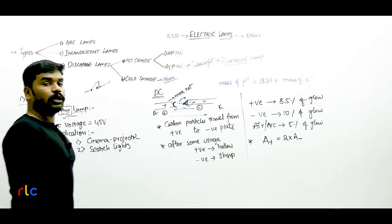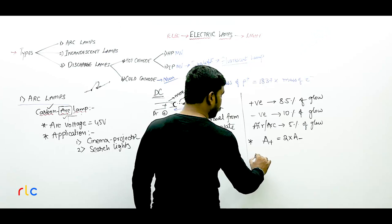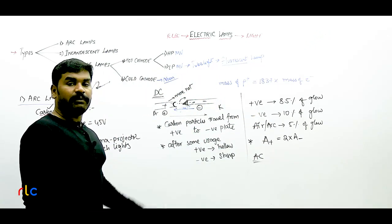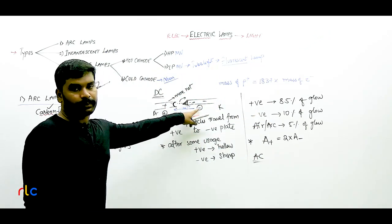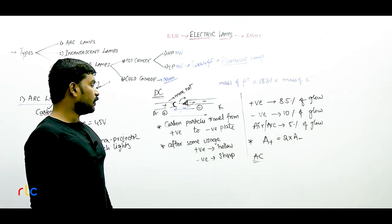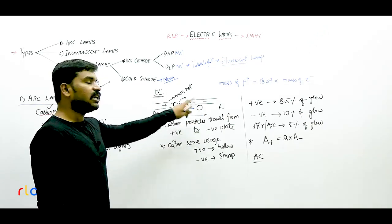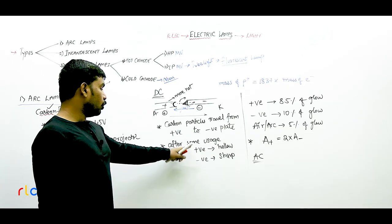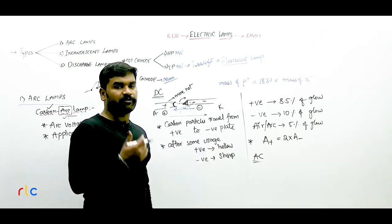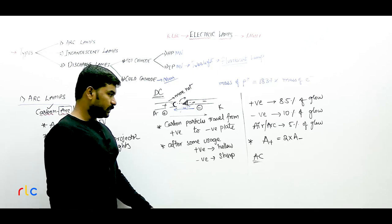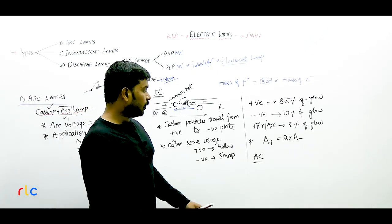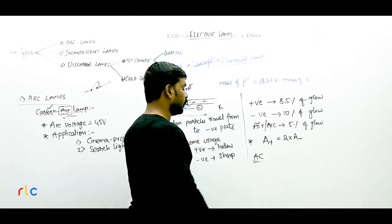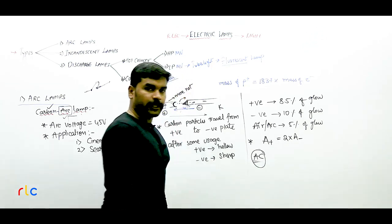When a carbon arc lamp uses AC supply, all these things change. The glow is split 50%-50% on both sides, heating is equal on both sides, you don't get the hollow and sharp electrode formations, and the cross-section areas of the positive and negative plates may be equal.